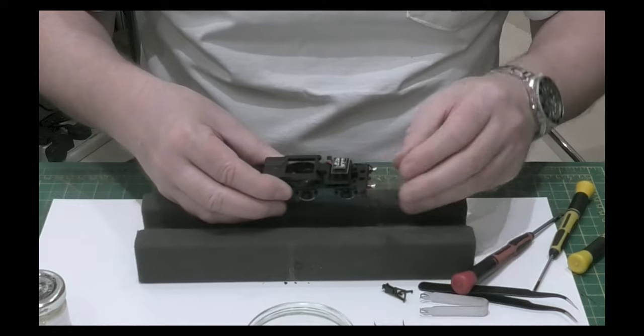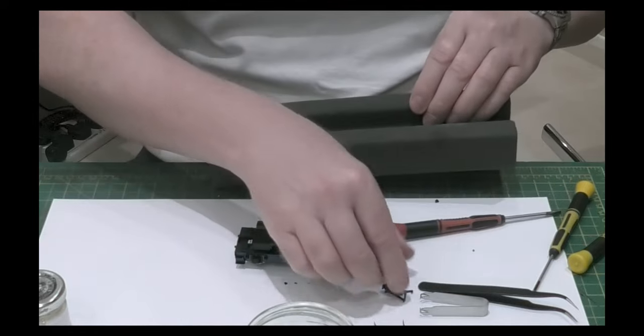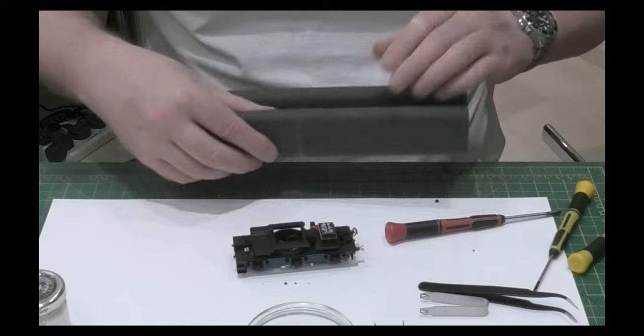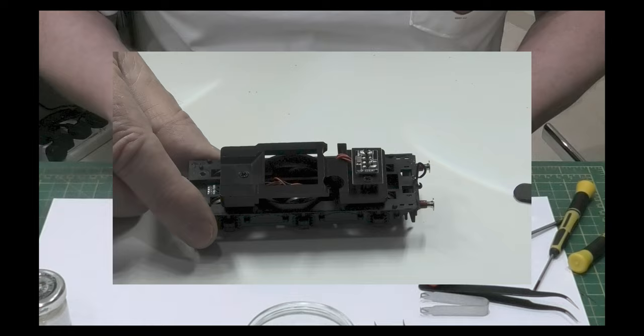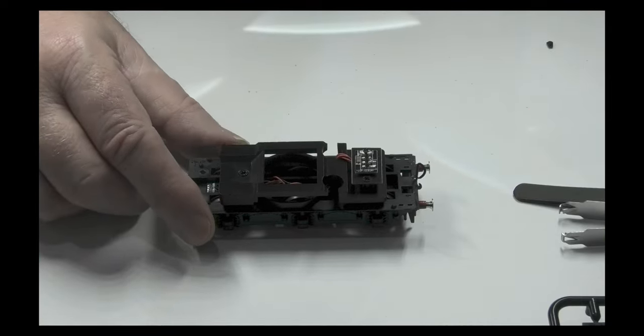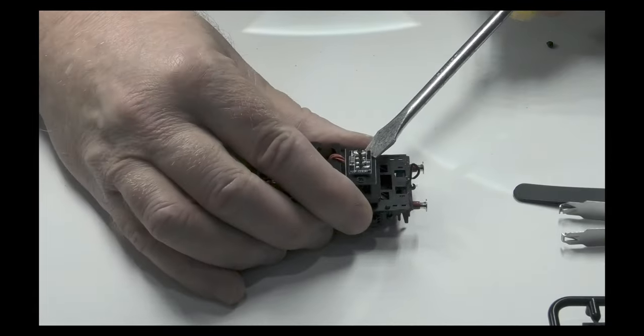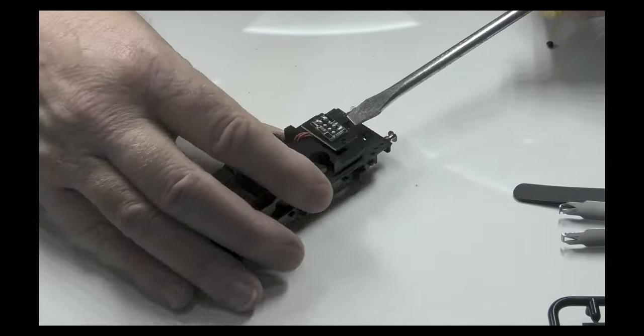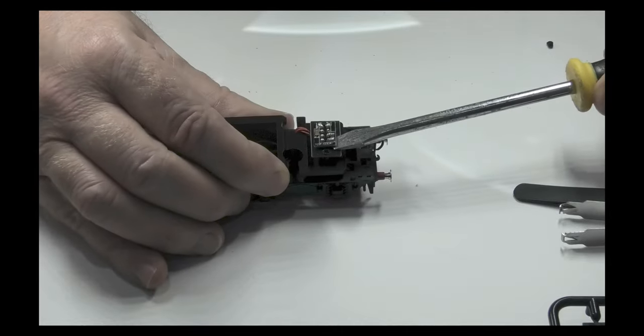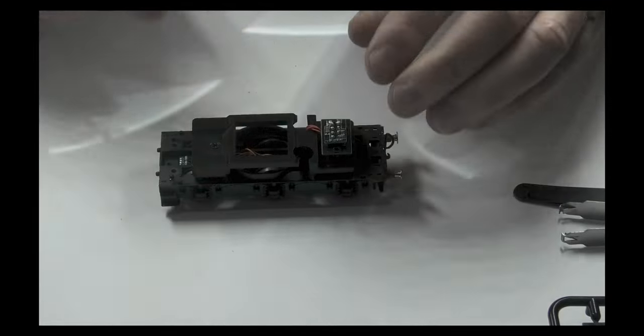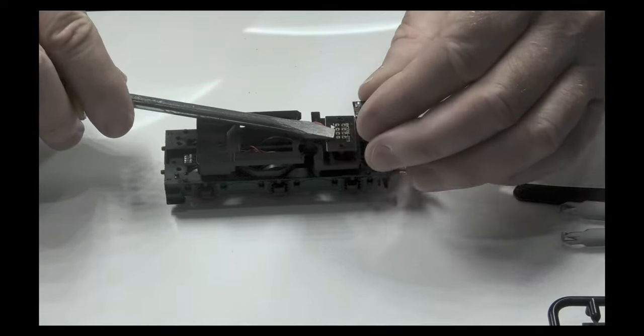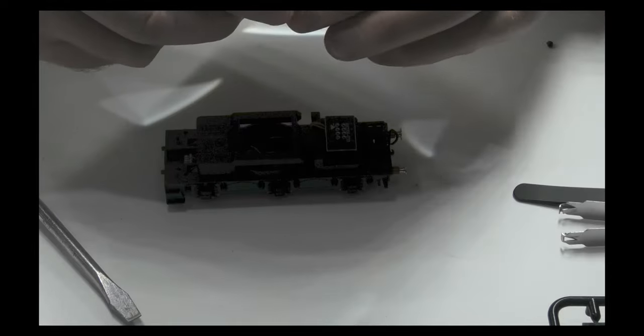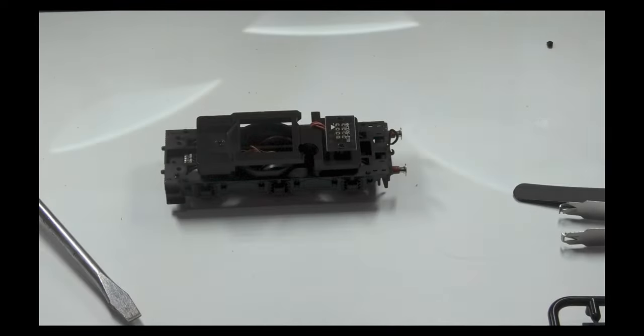The first thing we do is we remove the blanking chip and you just gently do it, you don't go mad. Gently remove it, prizing it out each side and it comes out easily. Take it right out of the way.